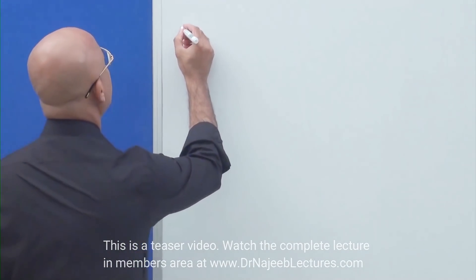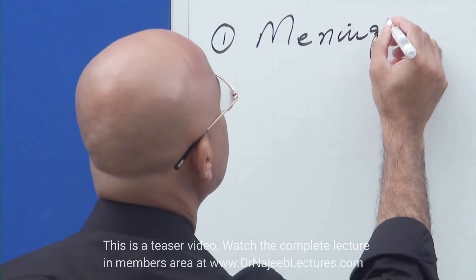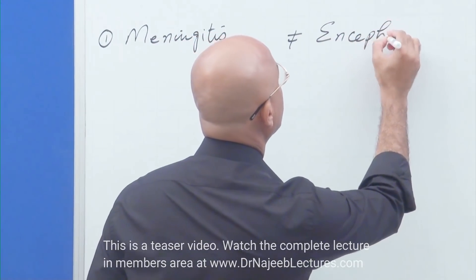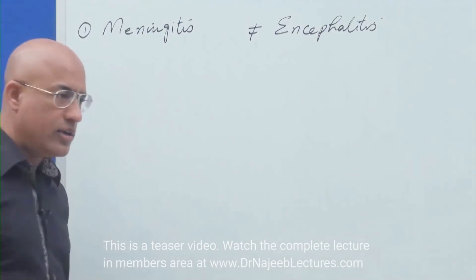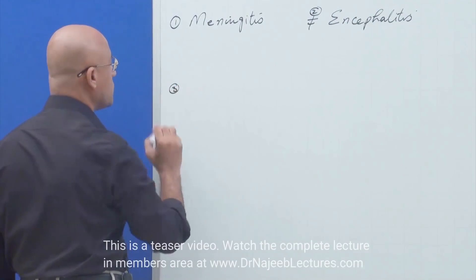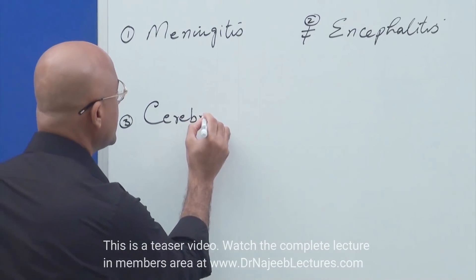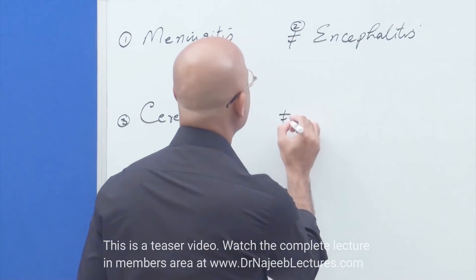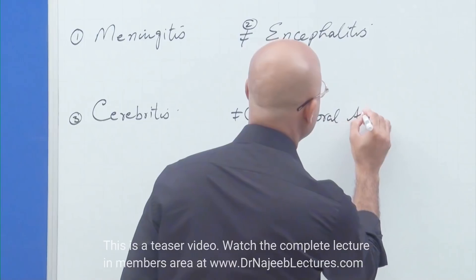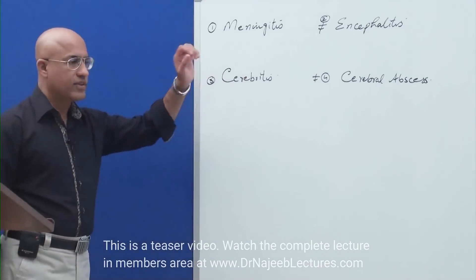The terms should be clear in your mind. Number one is: what is the difference between meningitis and encephalitis? We should know the difference between these two terms, and then we must know the difference between two more terms — cerebritis and cerebral abscess. So let us talk about first meningitis and encephalitis.